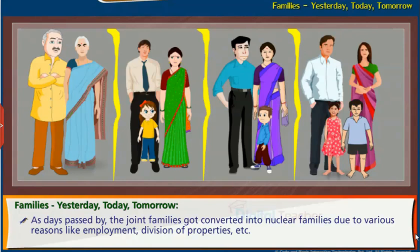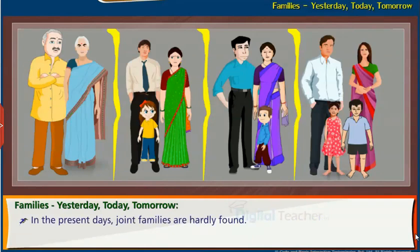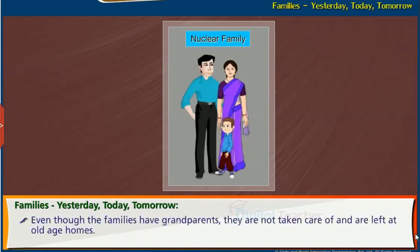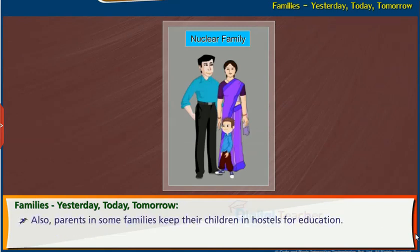As days passed by, joint families got converted into nuclear families due to various reasons like employment, division of properties, etc. In the present days, joint families are hardly found. Nowadays, we mostly find families with just mother, father and children — such families are called nuclear families. Even though some families have grandparents, they are not taken care of and are left at old age homes. Also, parents in some families keep their children in hostels for education.